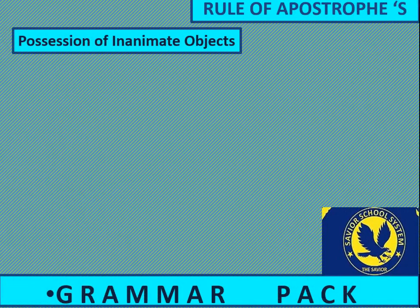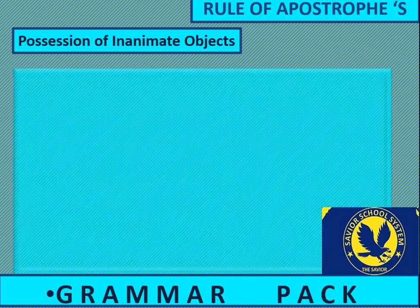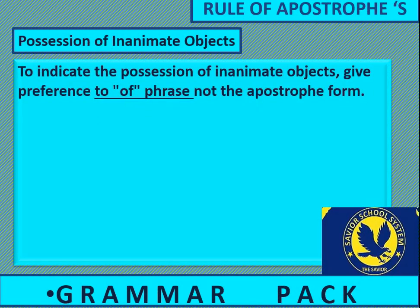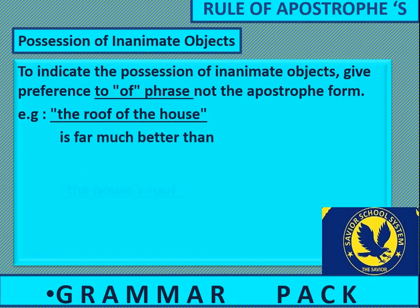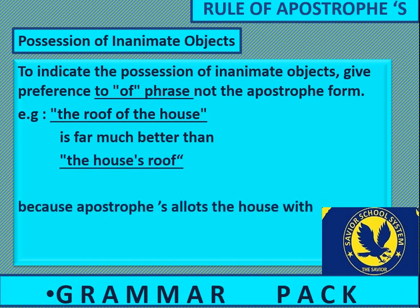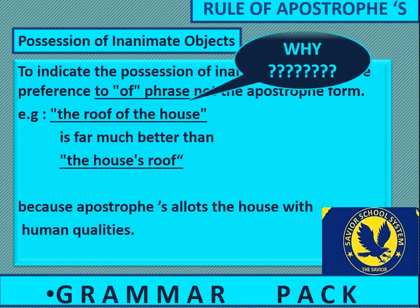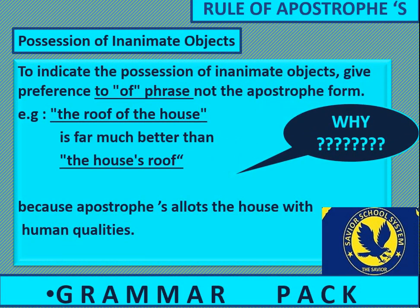Possession of inanimate objects. To indicate the possession of inanimate objects, give preference to the 'of' phrase, not the apostrophe form. For example, 'the roof of the house' is far better than 'the house's roof,' because apostrophe s allots the house with human qualities. So we write 'the roof of the house' rather than 'the house's roof.'